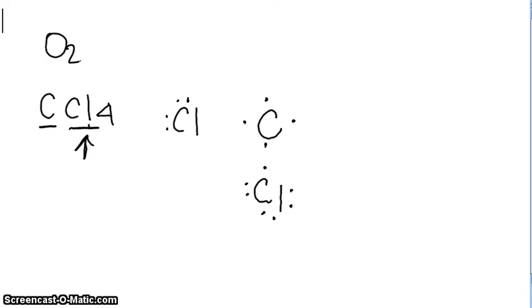And chlorine atoms like to surround the carbon. Each having seven valence electrons.